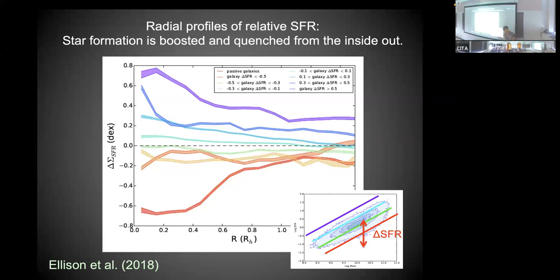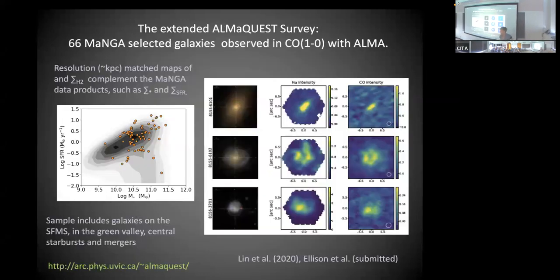Quenched galaxies have low negative delta SFR. We can draw their average profile here in red. We see this nice symmetry - just as there was an enhancement everywhere in starburst galaxies, we see quenched galaxies are suppressed everywhere, but the signal is strongest in the center. From this MaNGA study, we concluded that regulation of star formation was happening preferentially in the center. Star formation was both boosted and suppressed from the inside out.